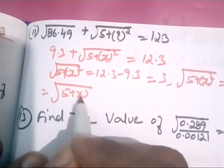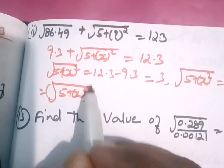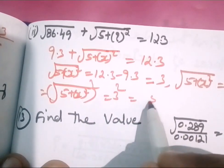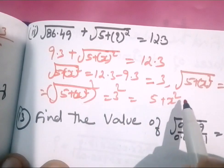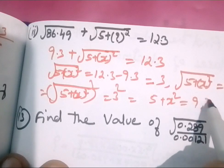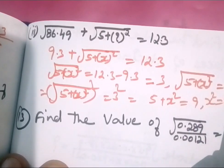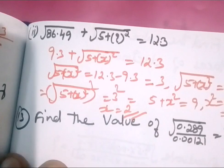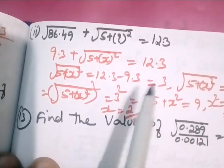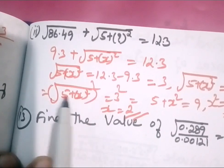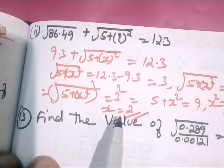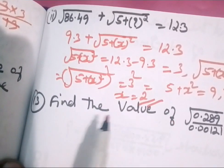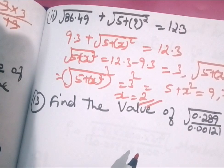That means 5 plus x squared is equal to 9. That means x squared is equal to 9 minus 5, which means 4. That means x is equal to 2. We have to do this square and square root, so x is equal to 4 and x is equal to 2. It is very easy.